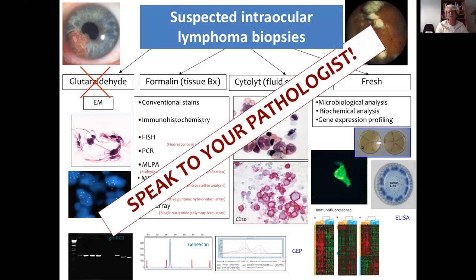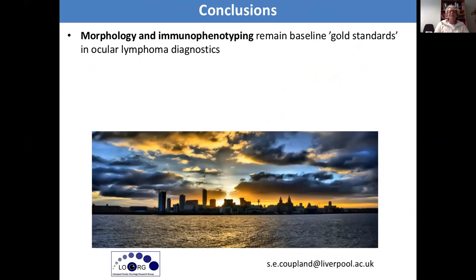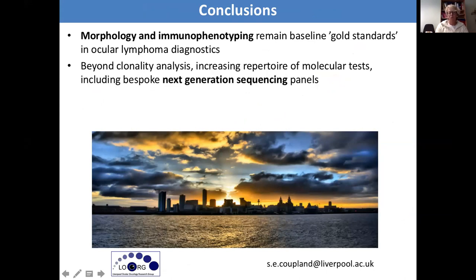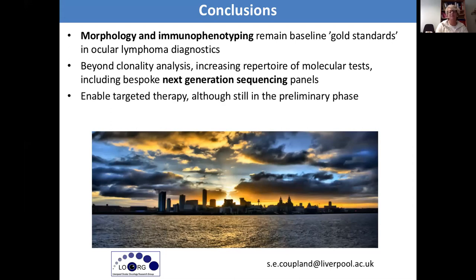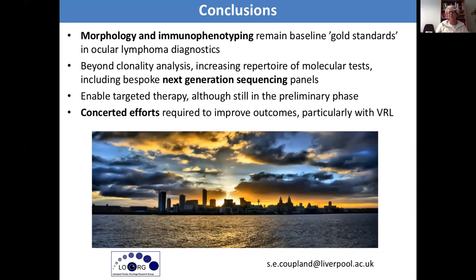To conclude: the morphology and immunophenotype of any sample provide the baseline gold standards for diagnostics. These molecular tests are all great but they are adjunctive tests. Increasingly we're getting bespoke next-generation sequencing panels designed for our ocular cancers, enabling targeted therapy — particularly if there is a targetable mutation such as MYD88. It's only through these concerted efforts that we'll be able to improve the outcomes, particularly for patients with vitreoretinal lymphoma.